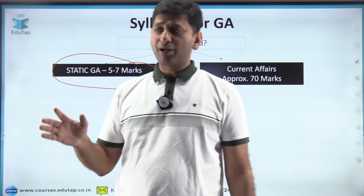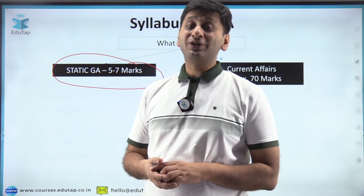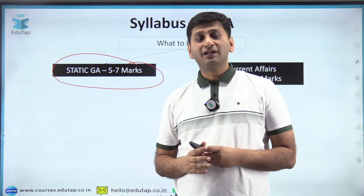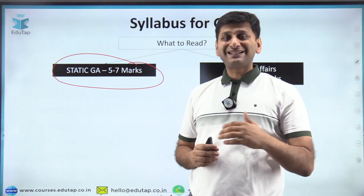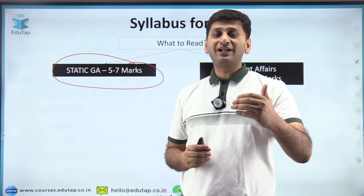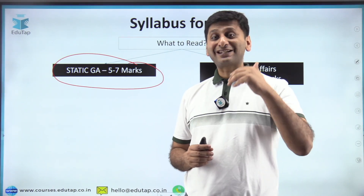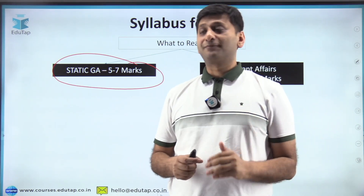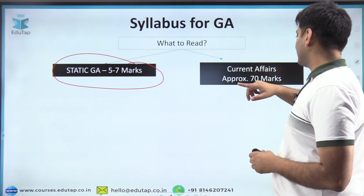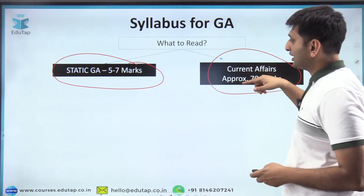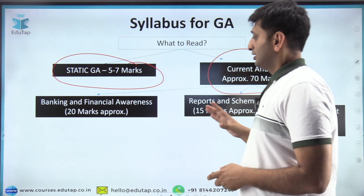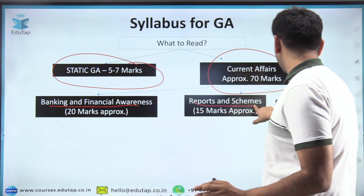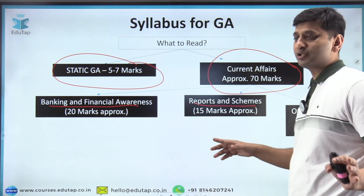Details derived from current affairs that we tend to ignore — like the headquarters of a committee or organization — are actually static knowledge we need to remember. For current affairs in GA, there are three pillars: banking and financial awareness, reports and schemes, and other current affairs including sports, awards, cyclones, alliances, etc.